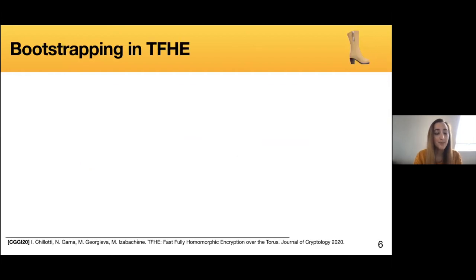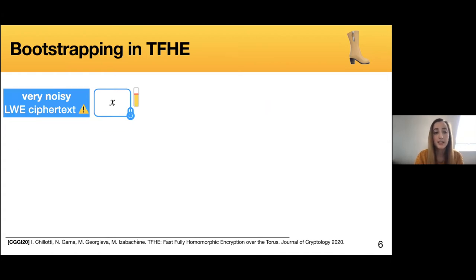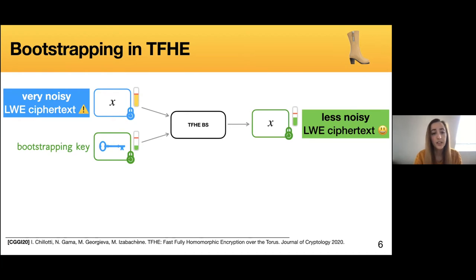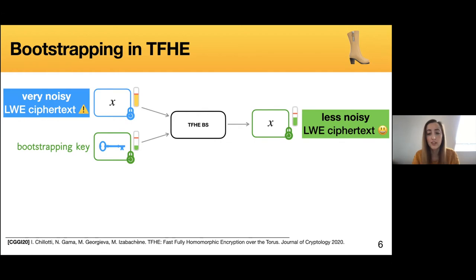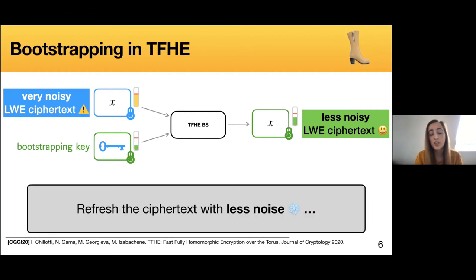Thankfully, there is a technique called bootstrapping that allows us to deal with this noise growth problem. TFHE has a bootstrapping. The bootstrapping of TFHE takes as input an LWE ciphertext that is noisy, and by using a bootstrapping key — which is an encryption of the secret key originally used to encrypt X — it evaluates the decryption circuit and produces a new LWE ciphertext with less noise inside, effectively refreshing the ciphertext noise.